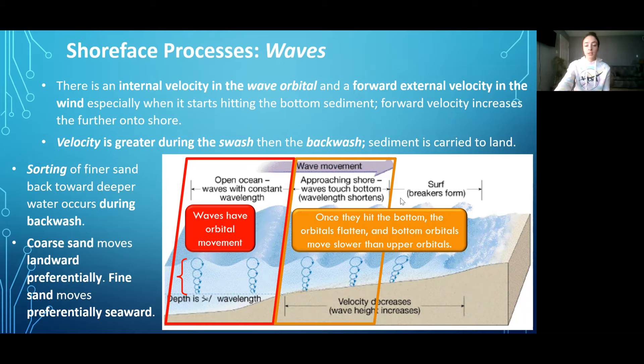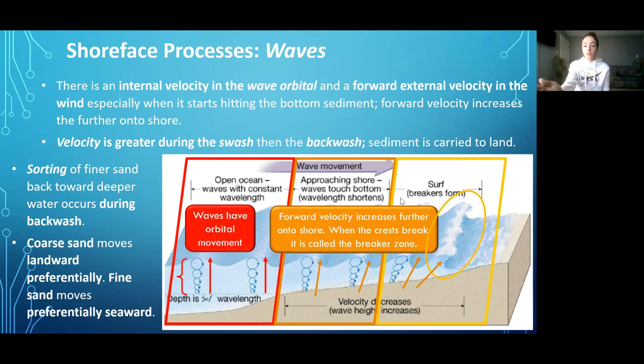When the orbitals hit the bottom sediment, the bottom orbitals begin to move slower than the top ones, causing a slanting of the wave orbitals, which causes faster forward velocity. This eventually causes the waves to break as they go further into shore. When the wave crests break, this is called the breaker zone.